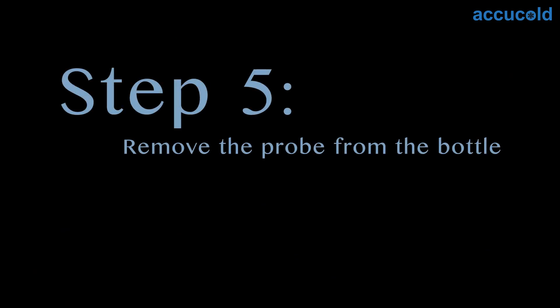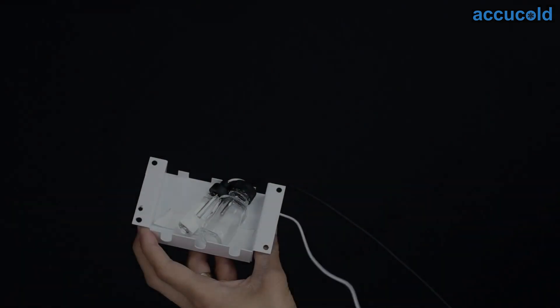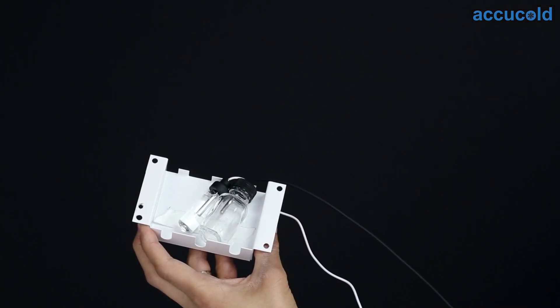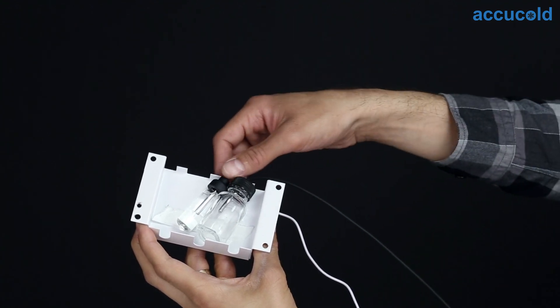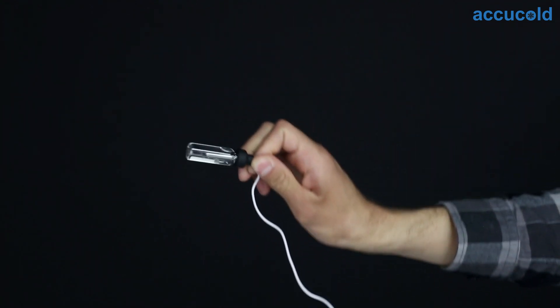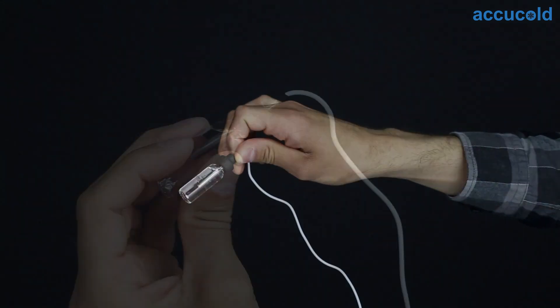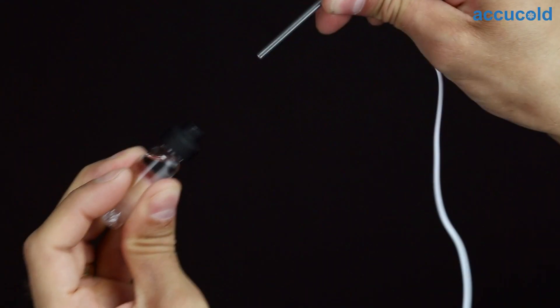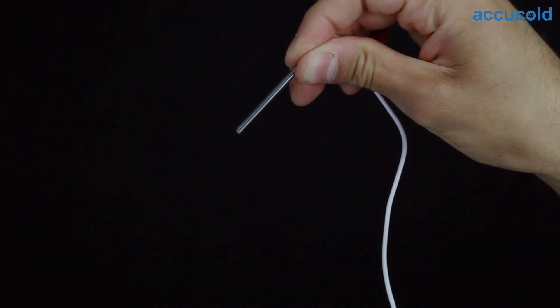Step five, remove the probe from the glycol filled bottle. The probe is located in a bottle attached to the bracket. There may be more than one probe, depending on your unit. Locate the bottle filled with glycol and remove it from the bracket. Gently pull the probe from the bottle and set the bottle aside.